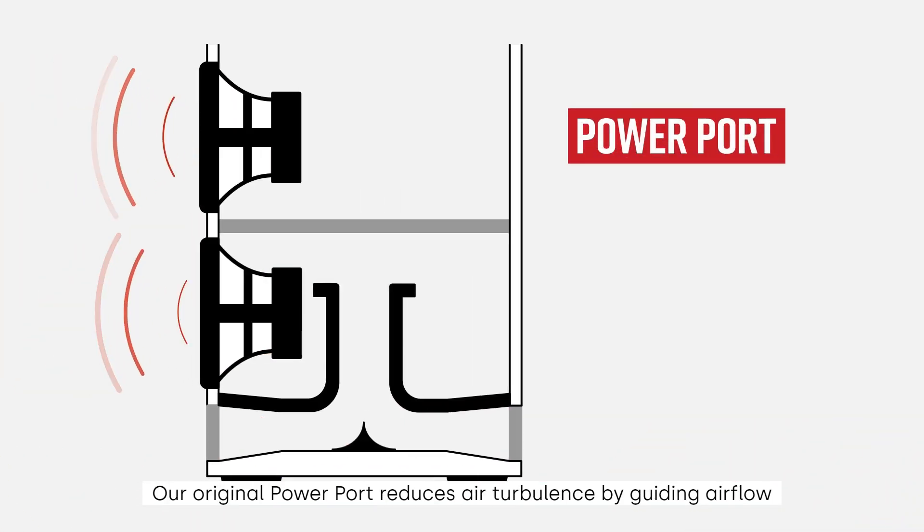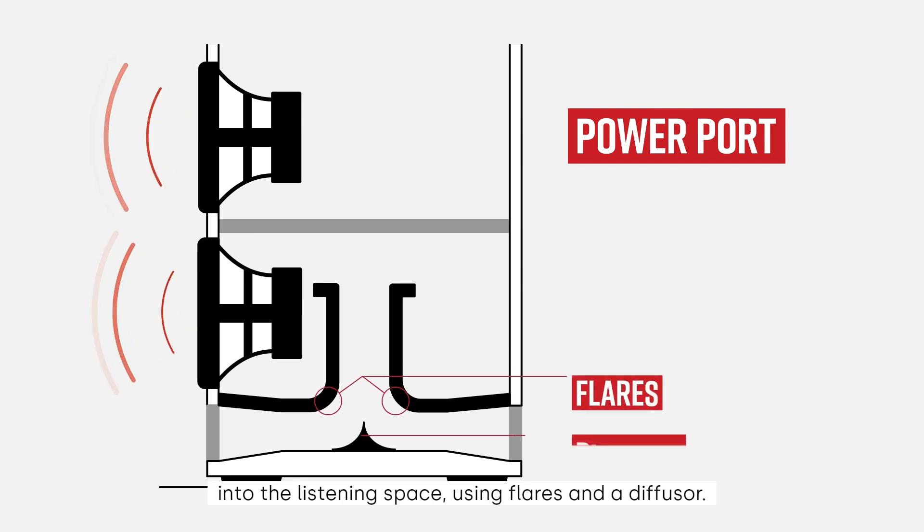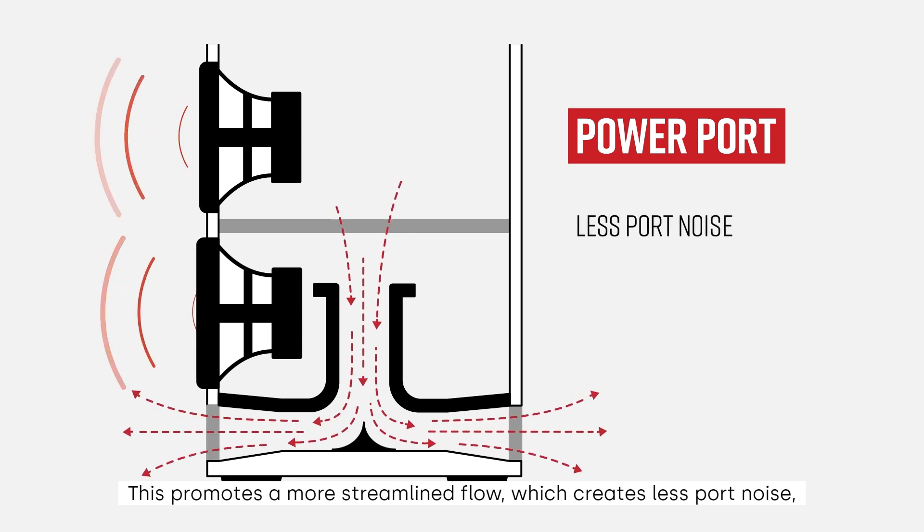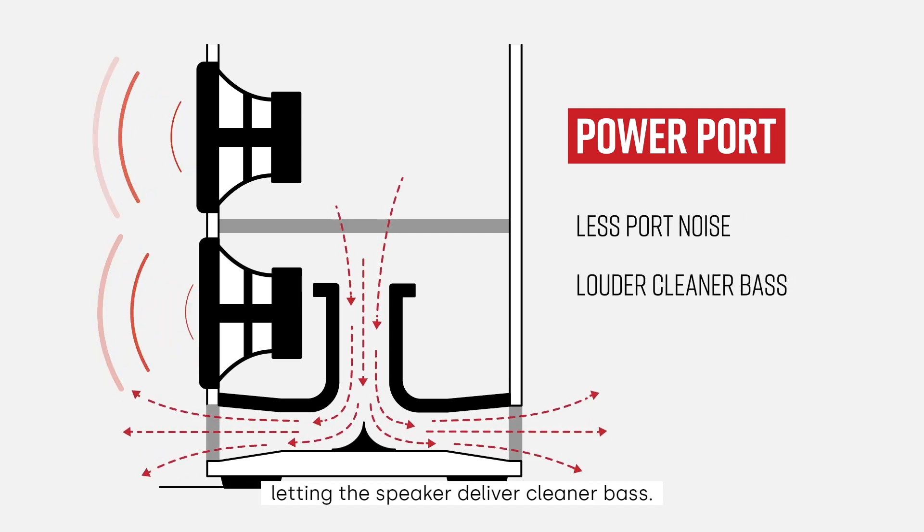Our original PowerPort reduces air turbulence by guiding airflow into the listening space using flares and a diffuser. This promotes a more streamlined flow, which creates less port noise, letting the speaker deliver cleaner bass.